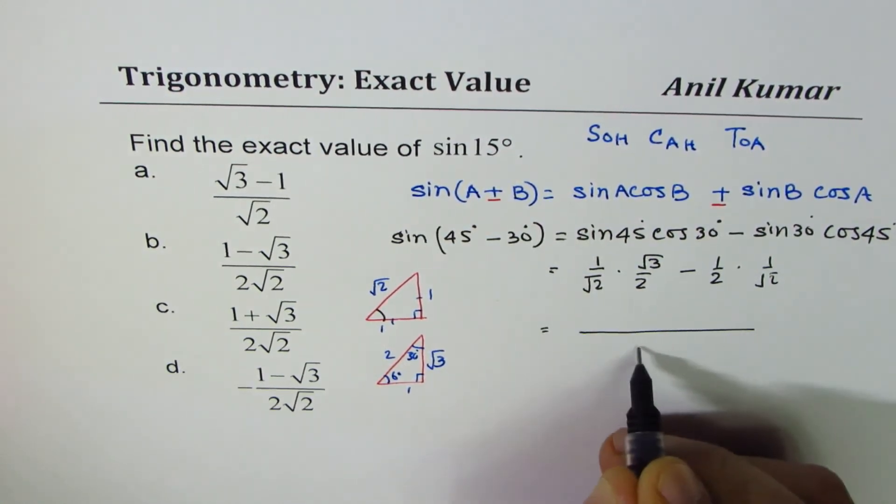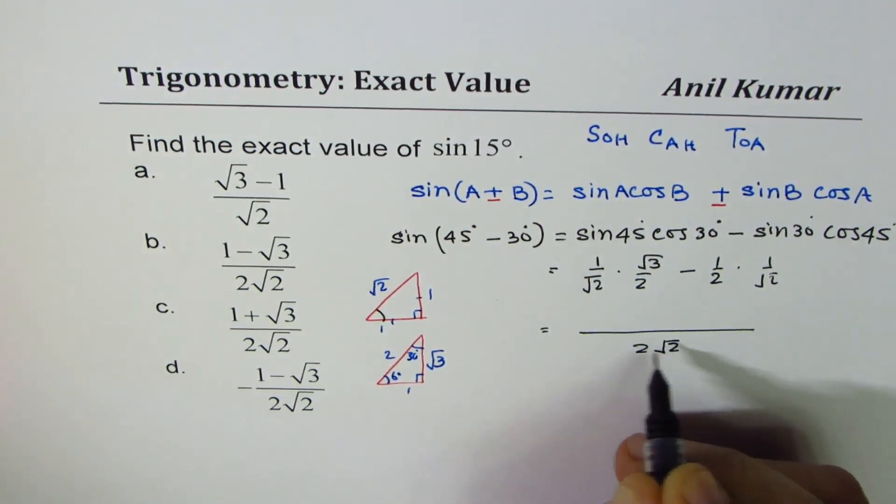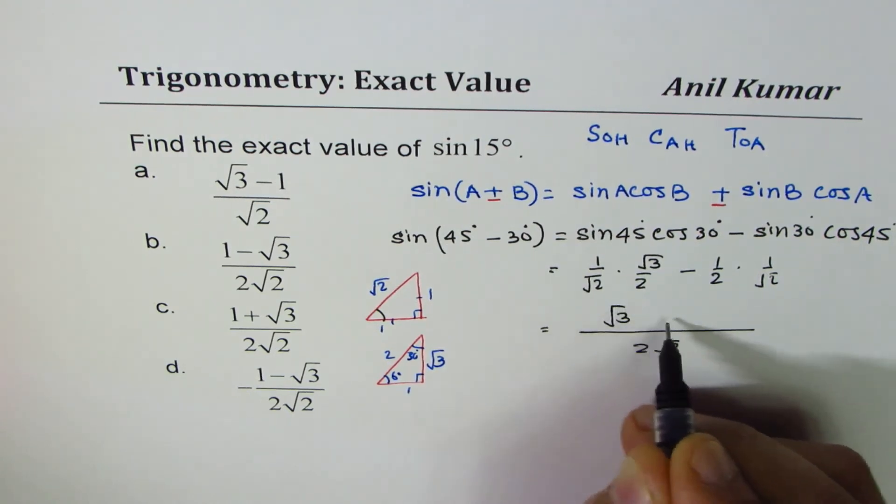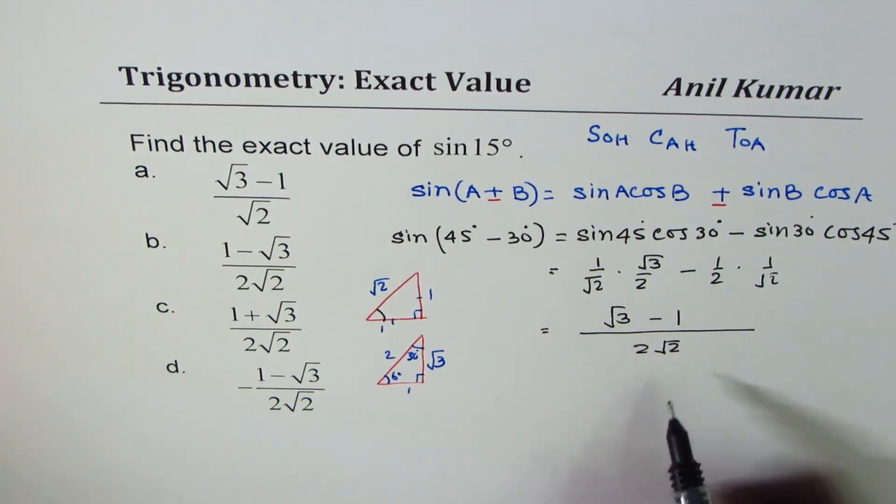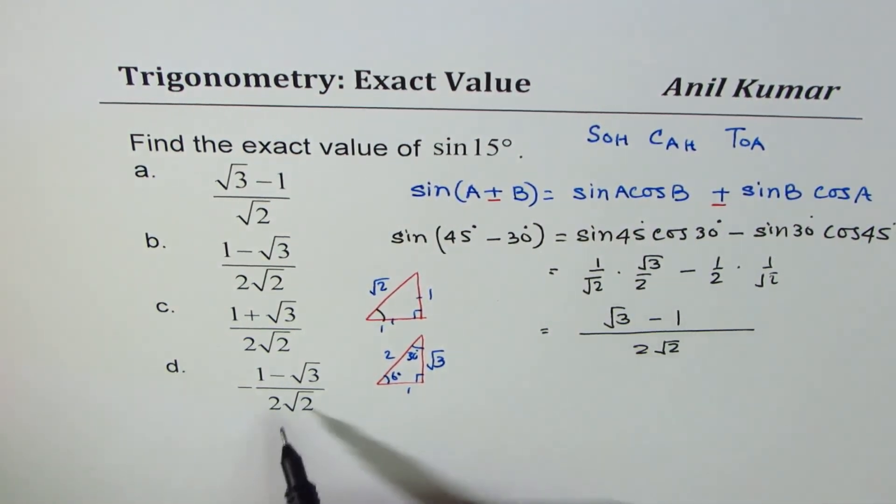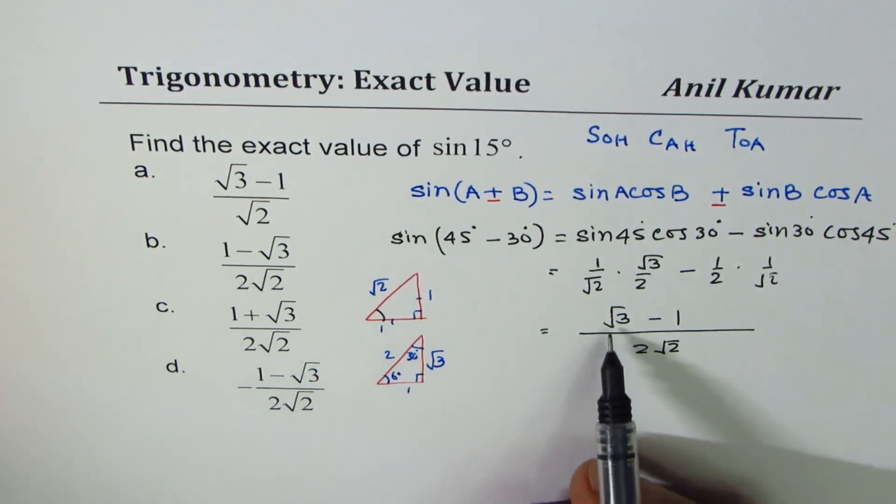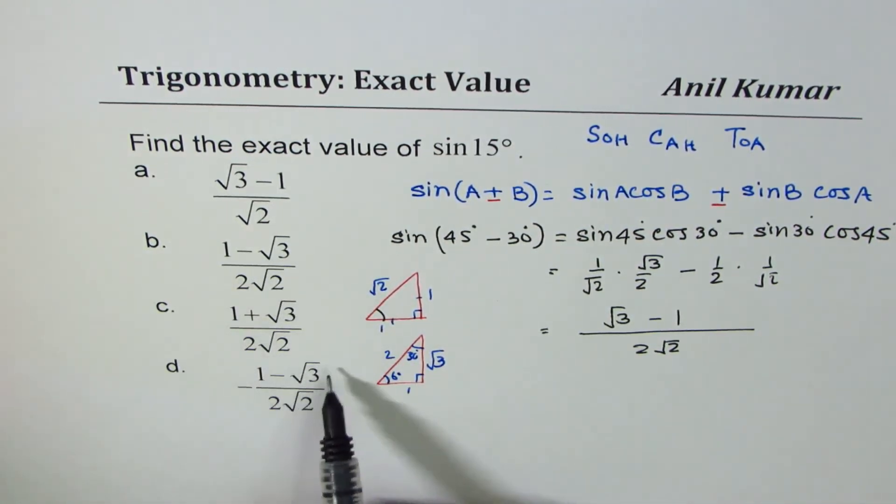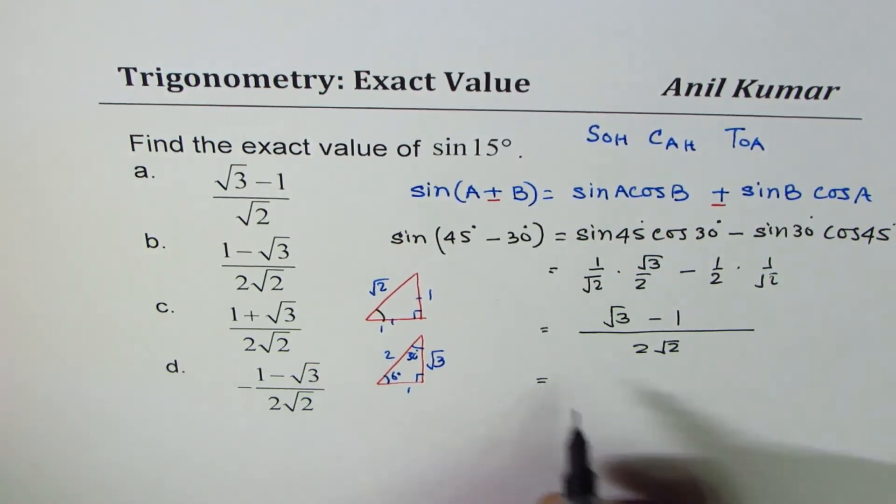Taking common denominator as 2 square root 2, we get square root 3 minus 1 as our answer. So the denominator is 2 square root 2, numerator is square root 3 minus 1.